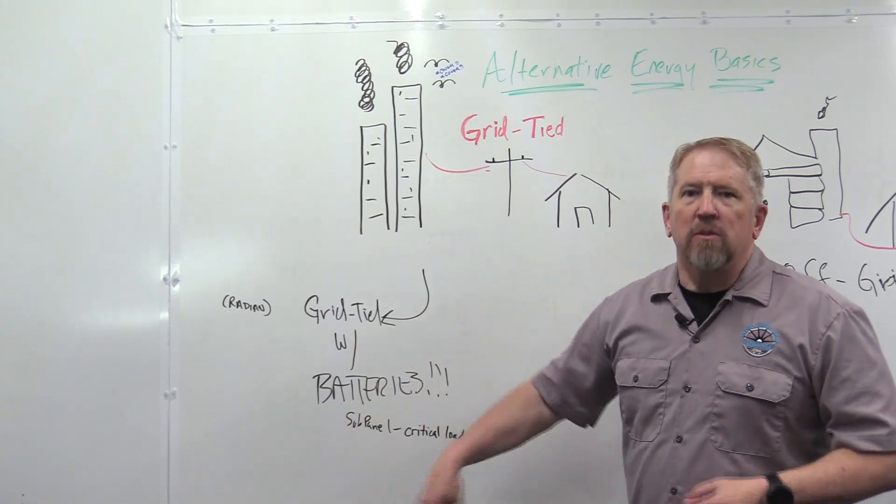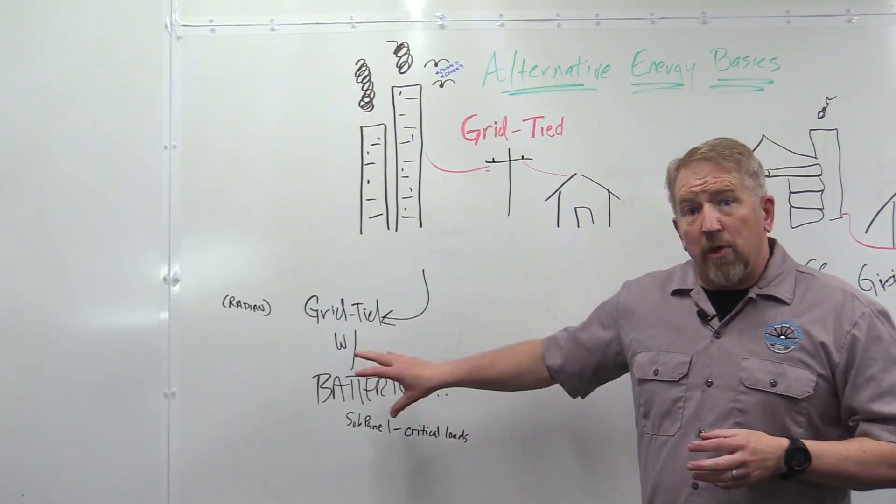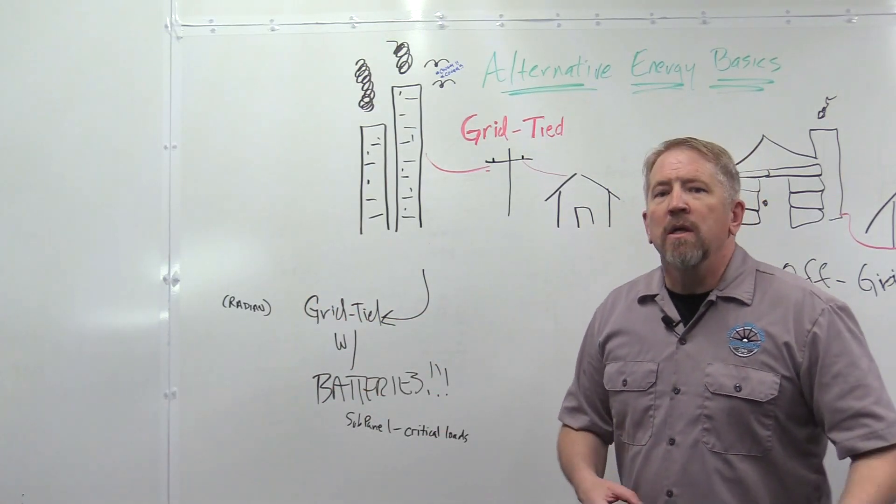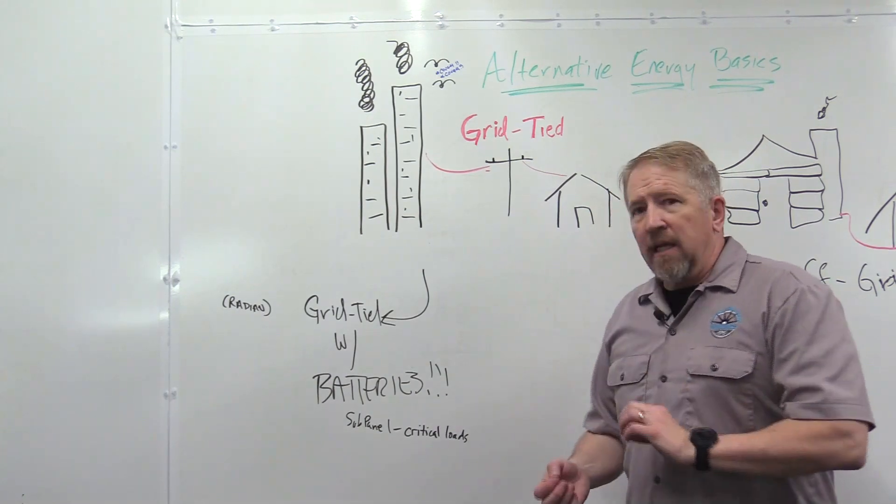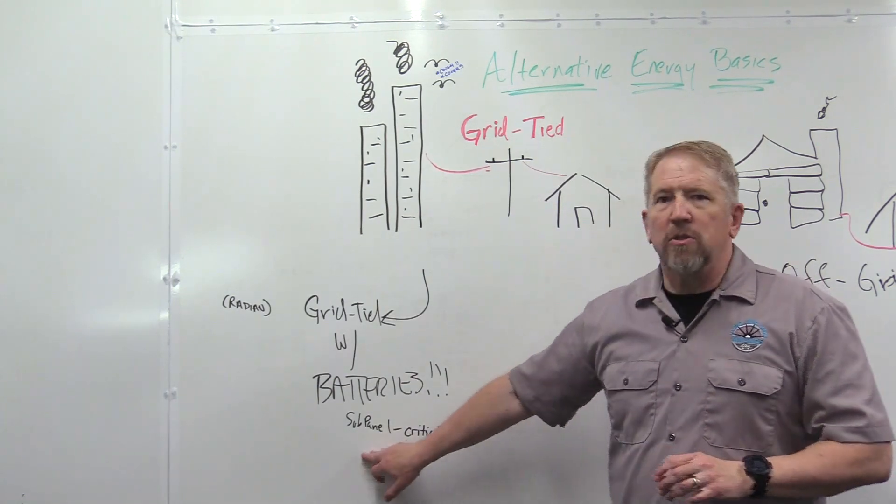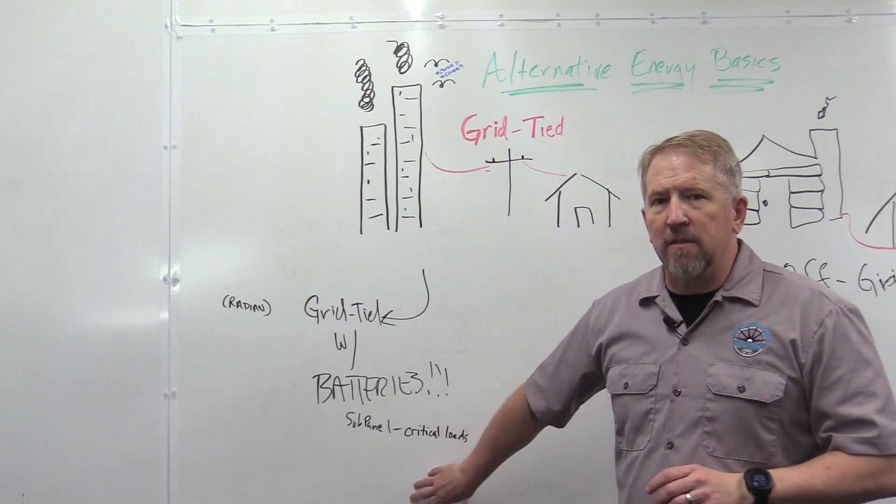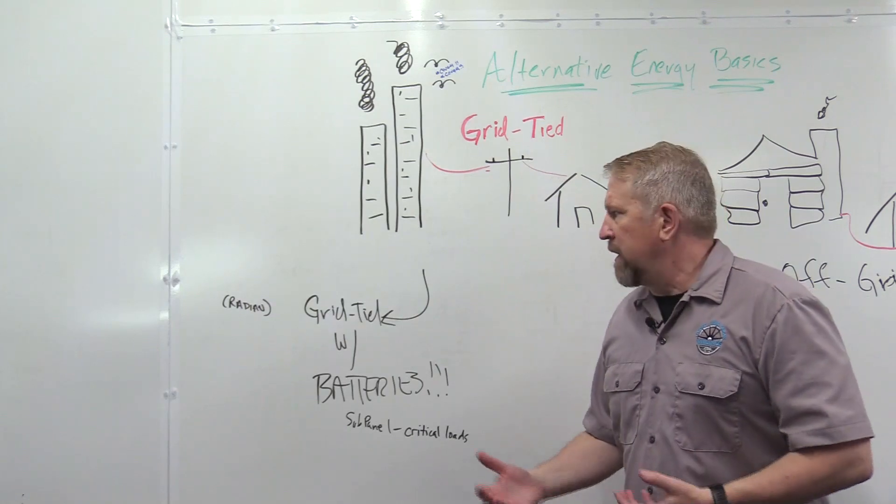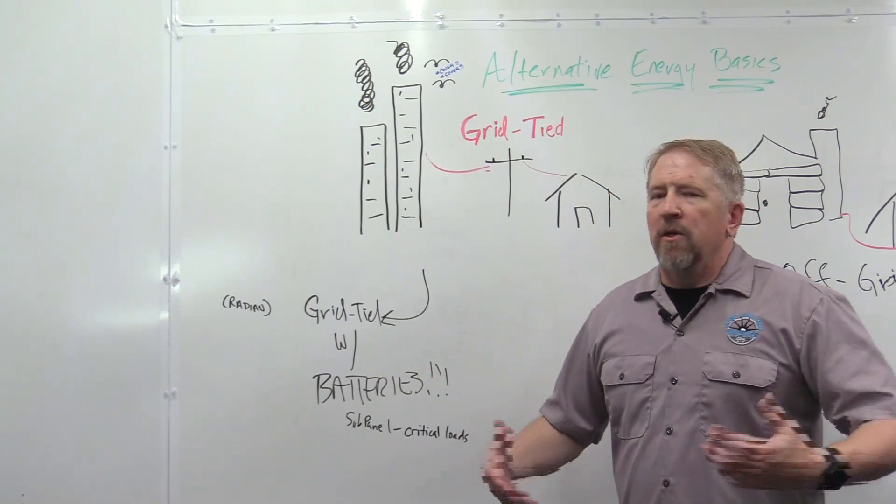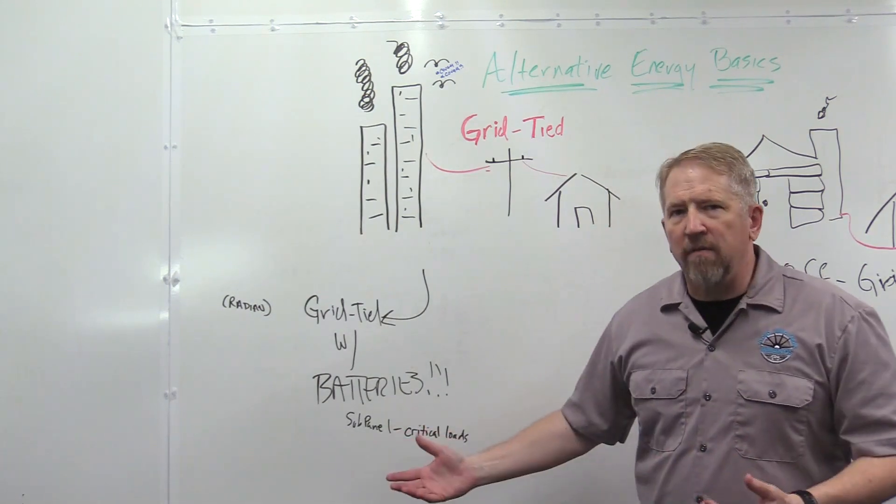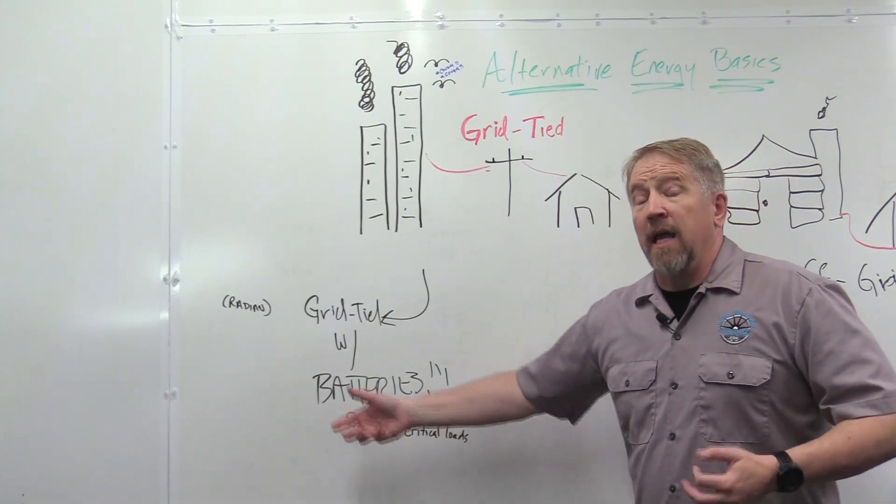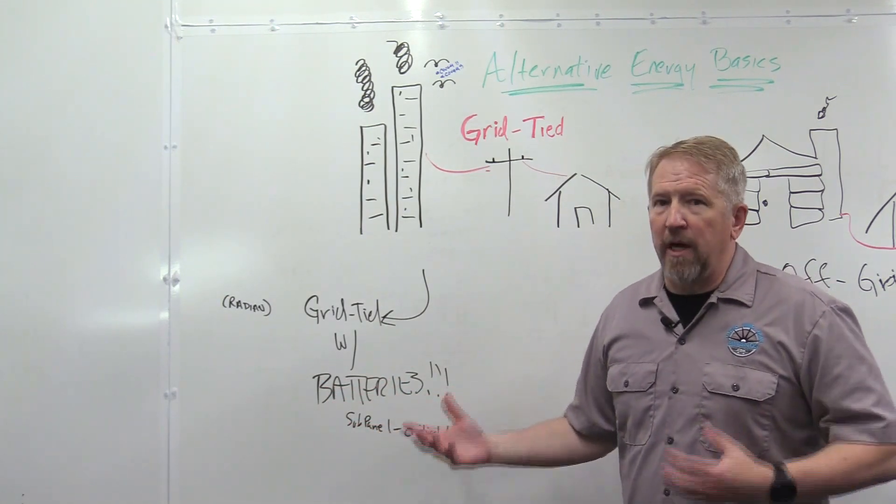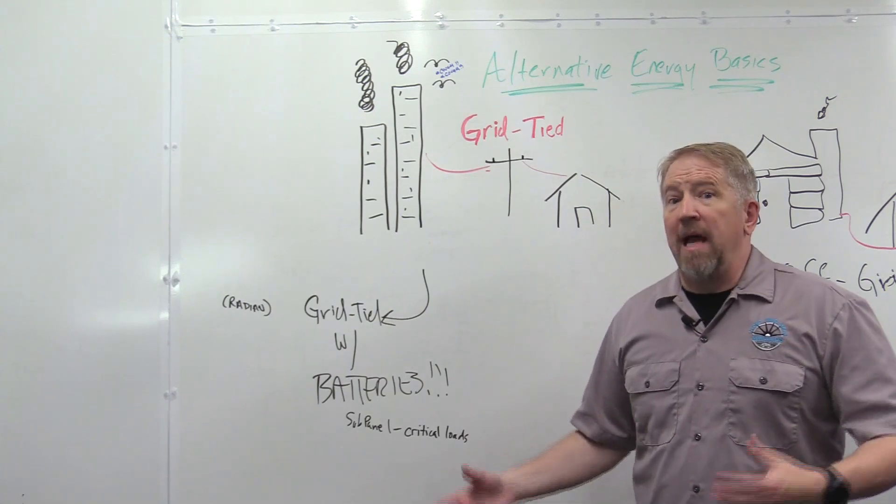And what happens is when the grid goes down, your controller senses that happening and switches to using power from the batteries. The key to this is that you need to make sure that you have a sub-panel in that system that's only carrying your critical loads. And you have to think about it from the standpoint of if you're in Florida, you're running your air conditioning unit. Well if you only have a few batteries and your system starts trying to pull enough energy from your batteries to run your air conditioning system, those batteries are going to last for about 20 seconds.